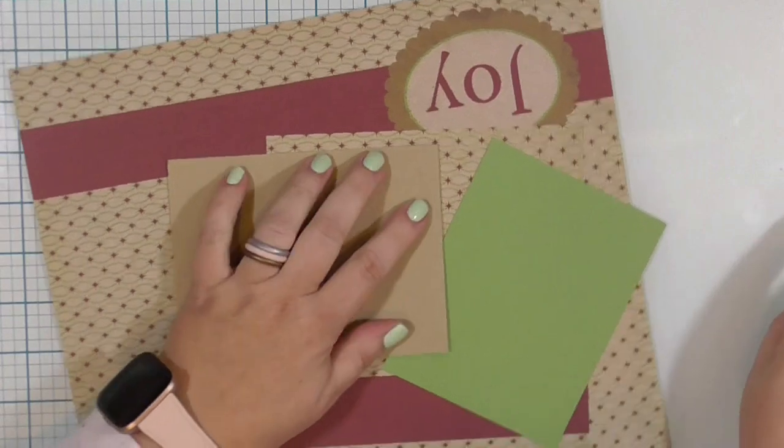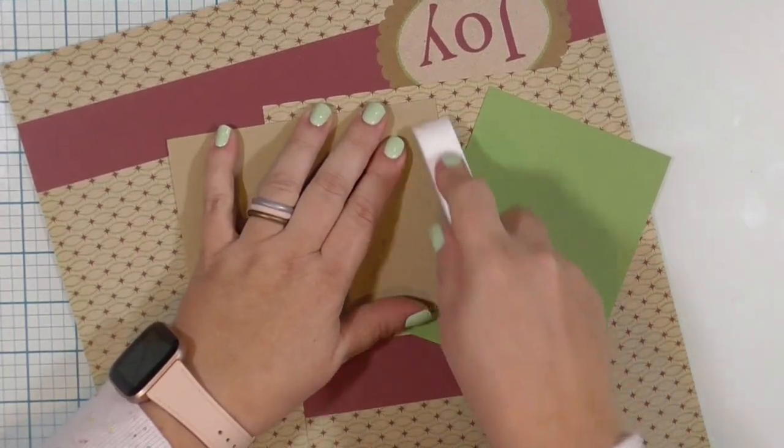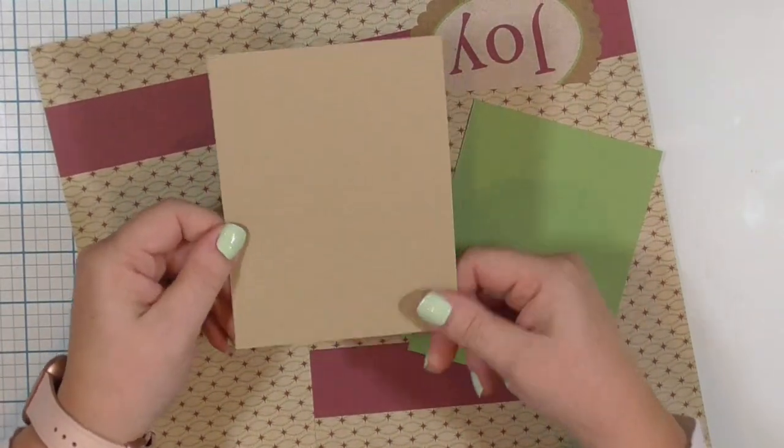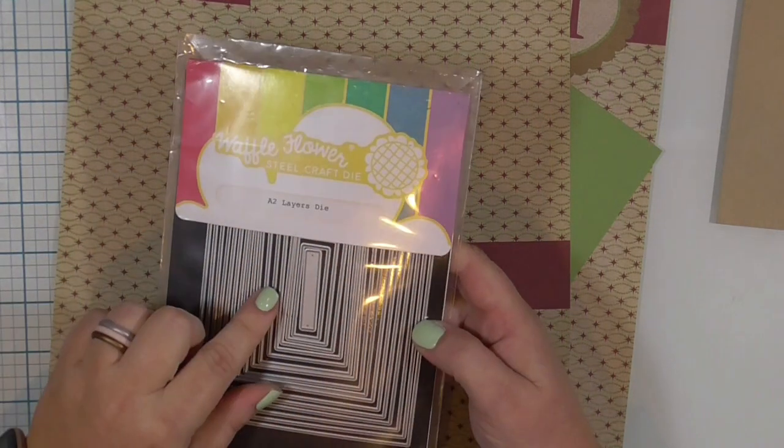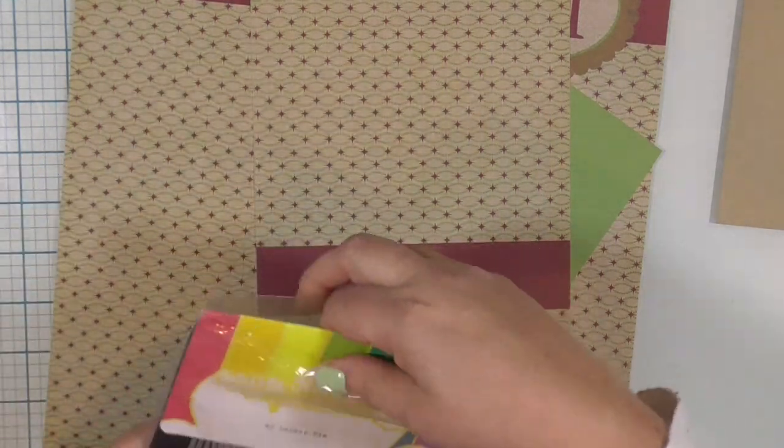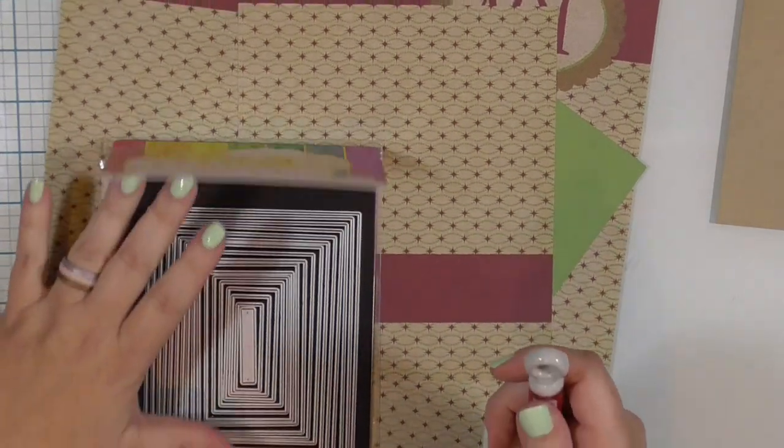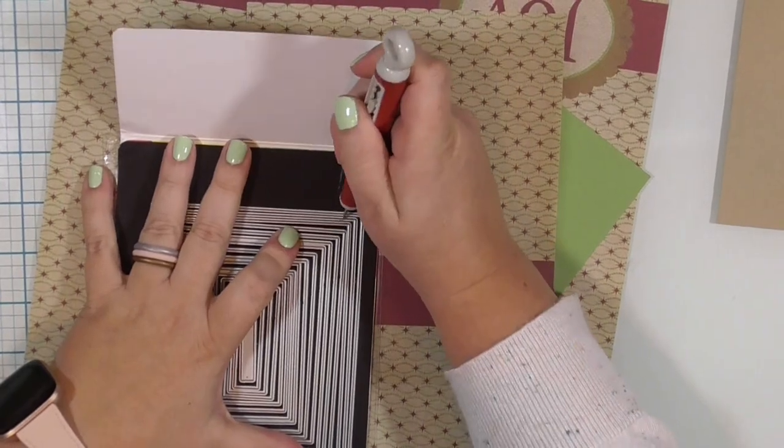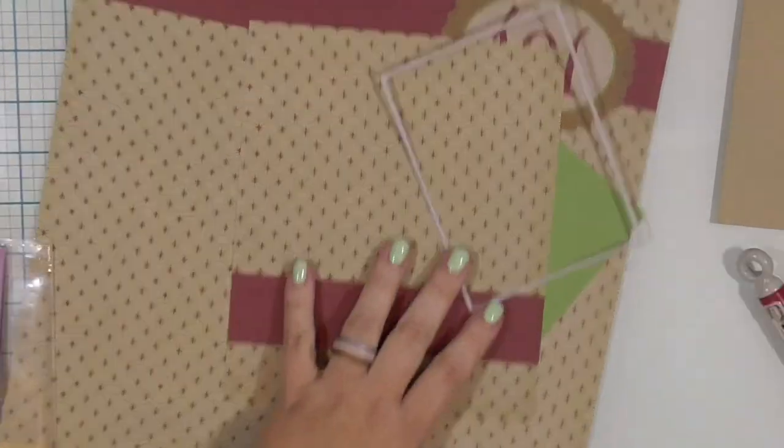My plan originally was to make the first or the bottom layer out of that iridescent paper. That is totally not what happened. I decided instead to use the Waffle Flower A2 layer dies to cut a piece of that pattern paper.